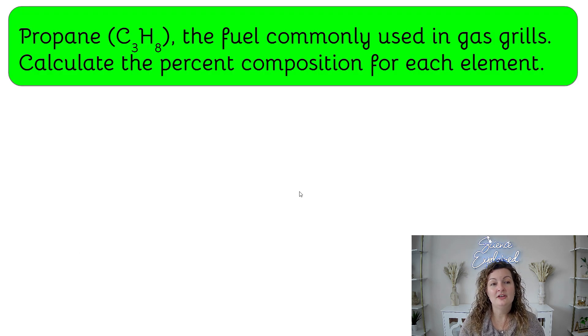Let's try another example. So propane, which is C3H8, the few commonly used in gas grills, calculate the percent composition for each element.